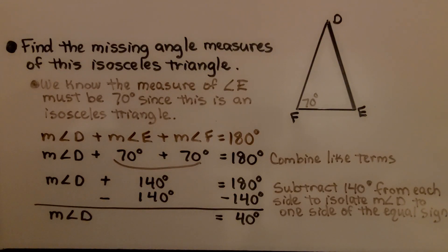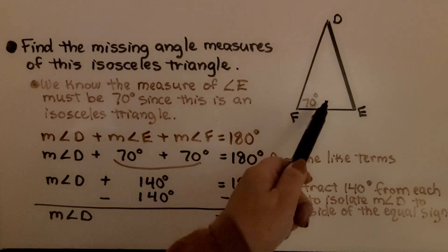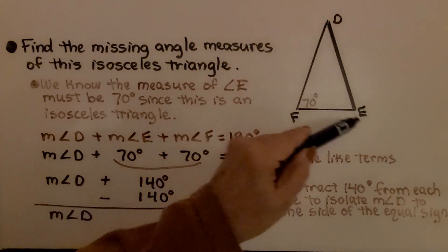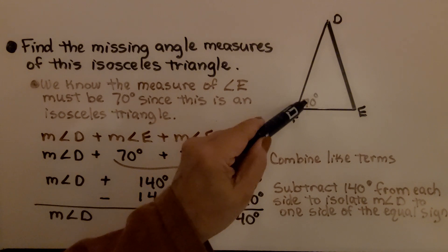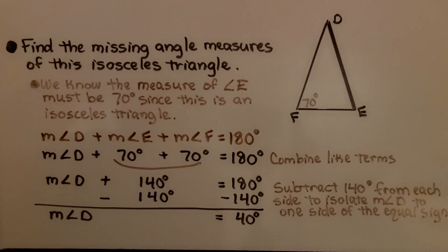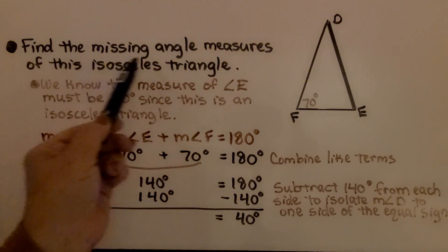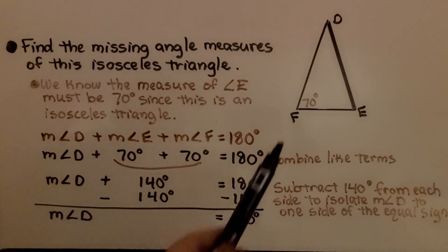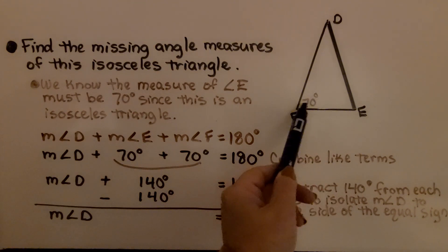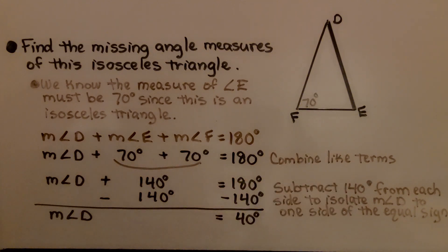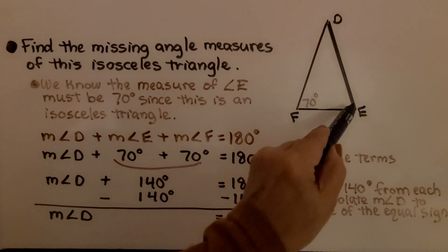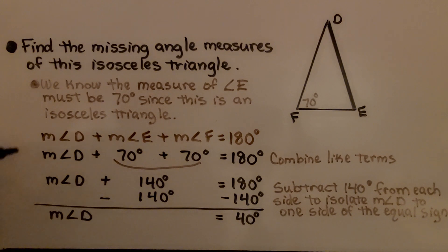Now let's find the missing angle measure of this isosceles triangle DEF. Looking at the diagram, we're only given one angle measure: 70 degrees. Because this is an isosceles triangle with two congruent angles, if one angle is 70 degrees, the other congruent angle must also be 70 degrees. We can now write our equation.